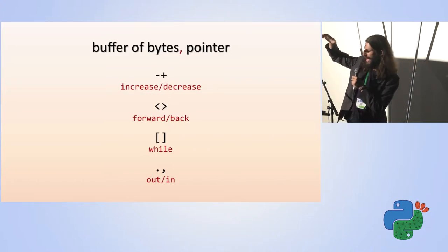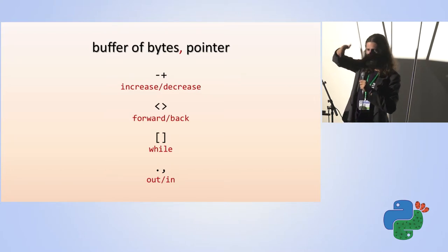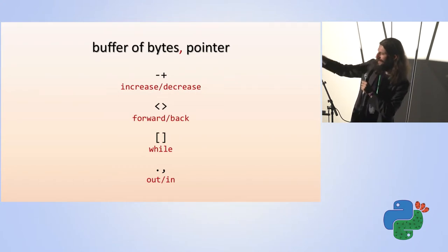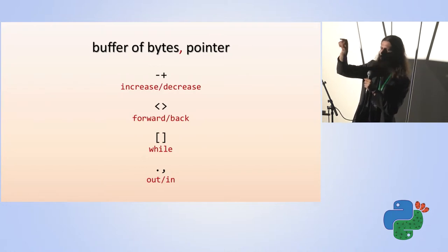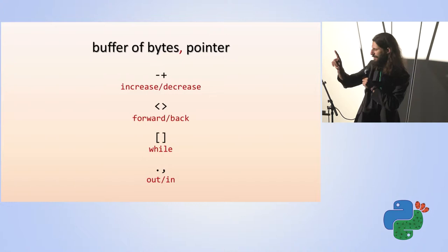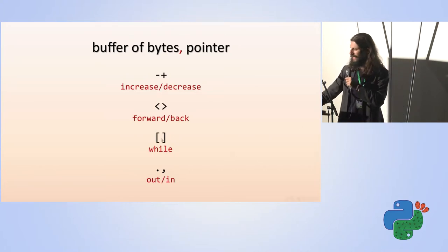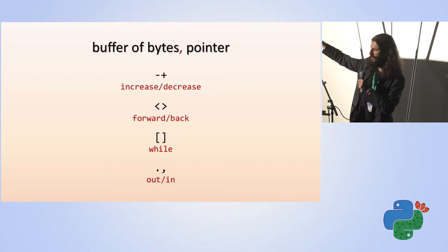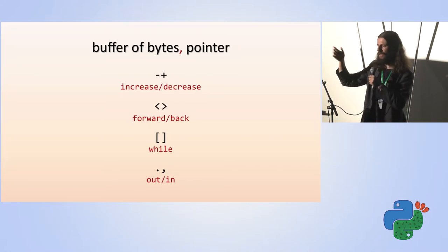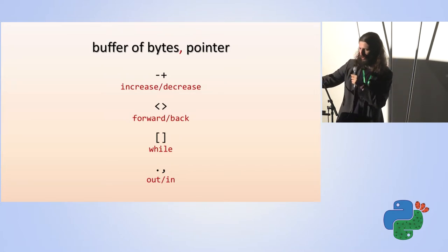Plus and minus increase and decrease values. You have a buffer of bytes — a long cyclic buffer of variables that can contain between 0 and 255 — and one pointer that points to one of those bytes. Plus and minus change the value at the pointer. The other commands move the cursor forward and back. Brackets work like a while loop: if the current value is zero when you hit a left bracket, you jump to the right bracket; otherwise you continue. When you encounter a right bracket, you jump back to the left bracket. You can nest brackets and it does the right thing. Dot is for output and comma is for input. That's the entire language.